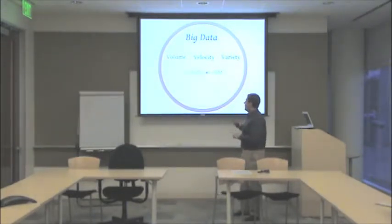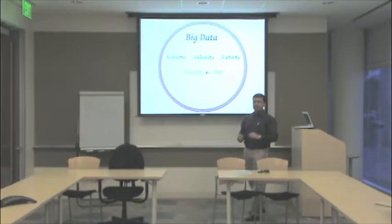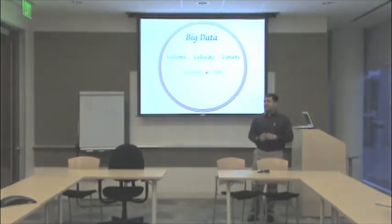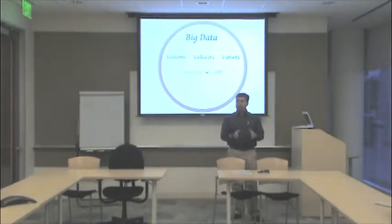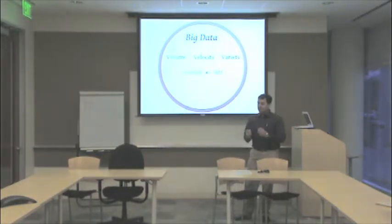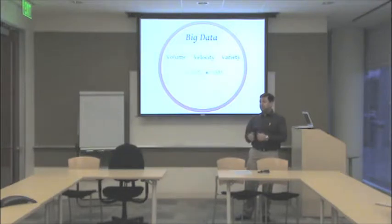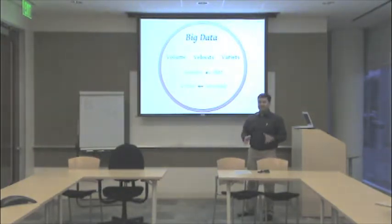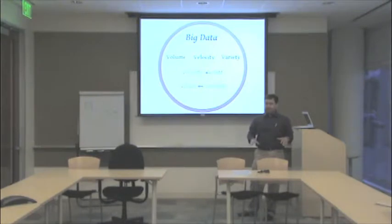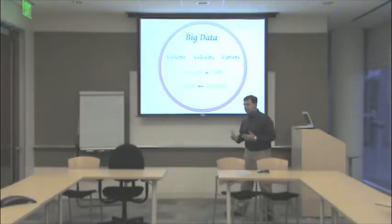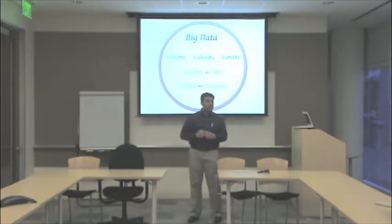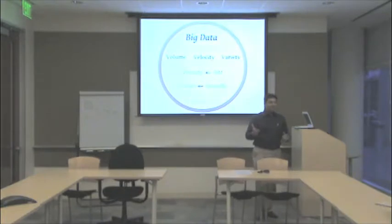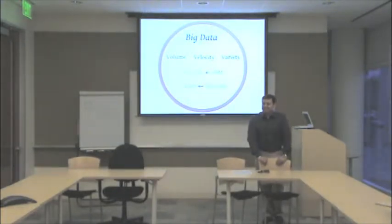In IBM marketing material, they have added one more V, which is Veracity — that is the inaccuracy in the data. Decision makers want accurate data, and IBM has an algorithm in their InfoSphere and Streams that can find out what data is correct and what is not. My friend at Serendio told me there is another V, which is Value. Big Data by itself is nothing until you compute it, make sense of it, and create value out of it. So there are five Vs.